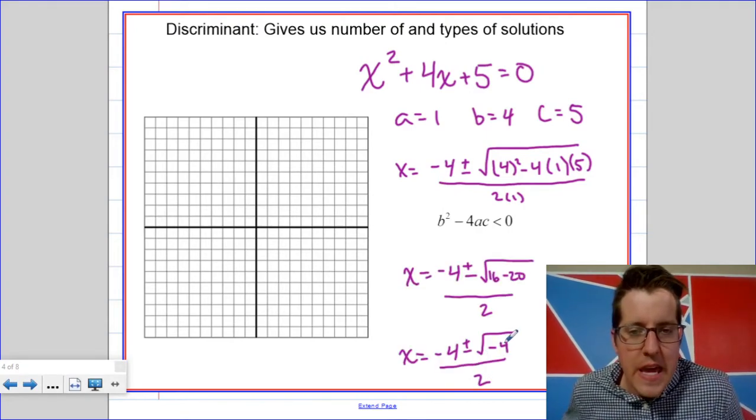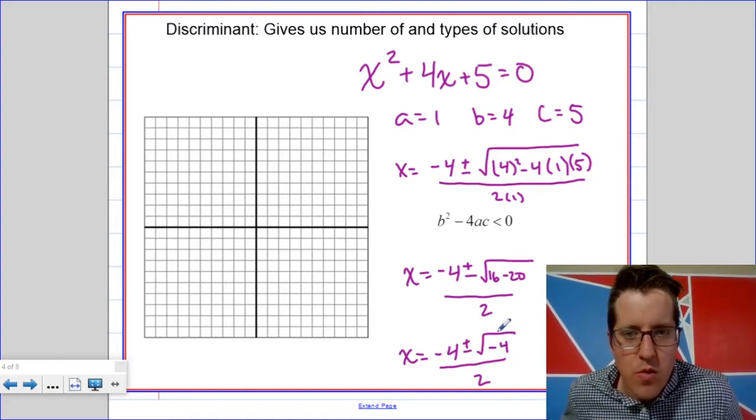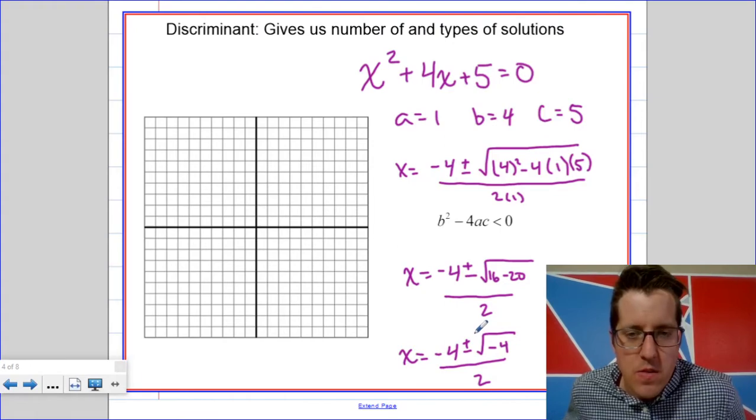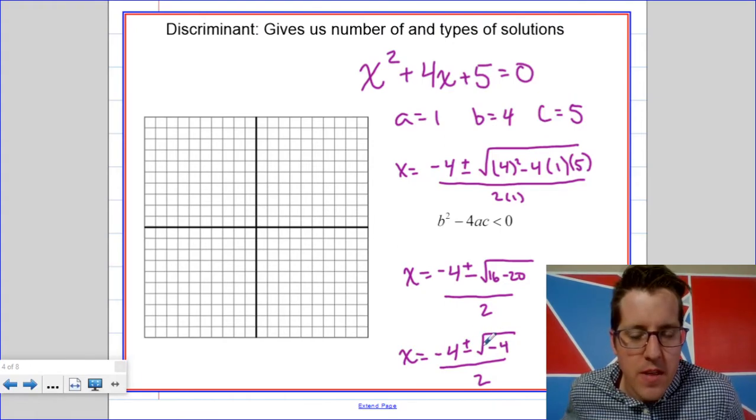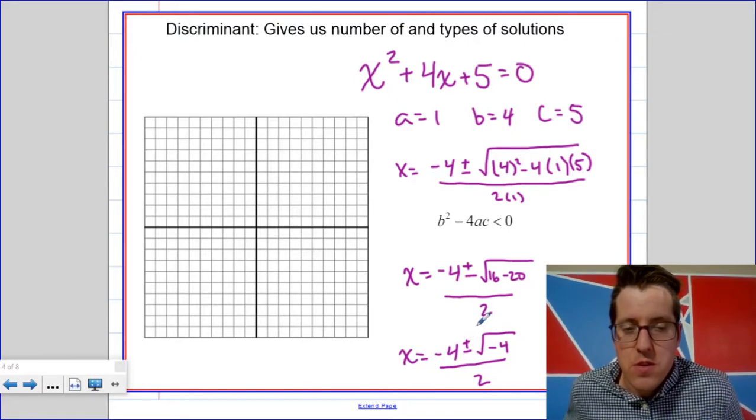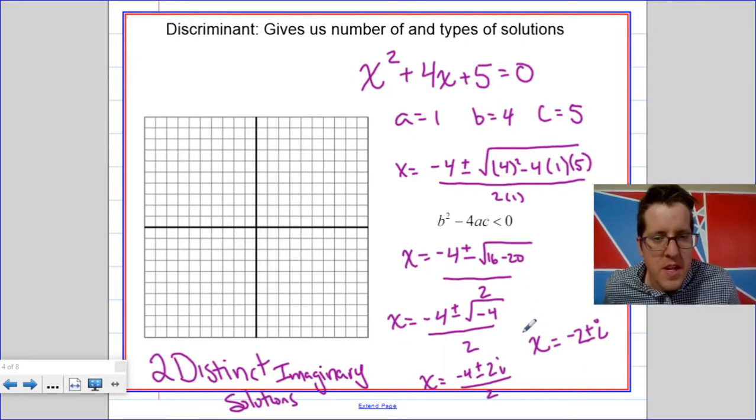So, okay, here I get a negative radicand. My discriminant is negative. So, for this reason, when my discriminant is negative, I'll be taking the square root of a negative number. And because of the plus or minus, I'm going to get two different imaginary solutions. So, in this case, I'm going to get x equals negative 2 plus or minus i.